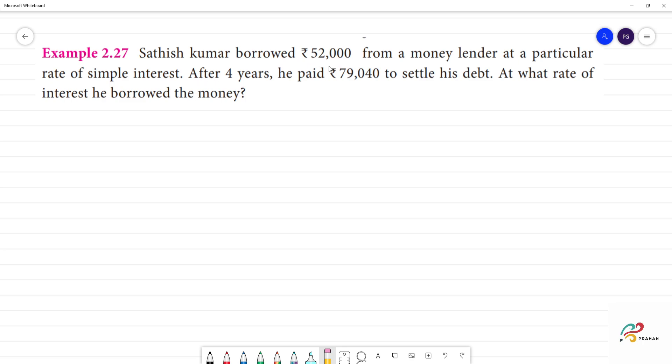Sahish Kumar borrowed Rs. 5,000, sorry, Rs. 52,000. Now, we can use the data set of principal amount. Principal amount is equal to Rs. 52,000.